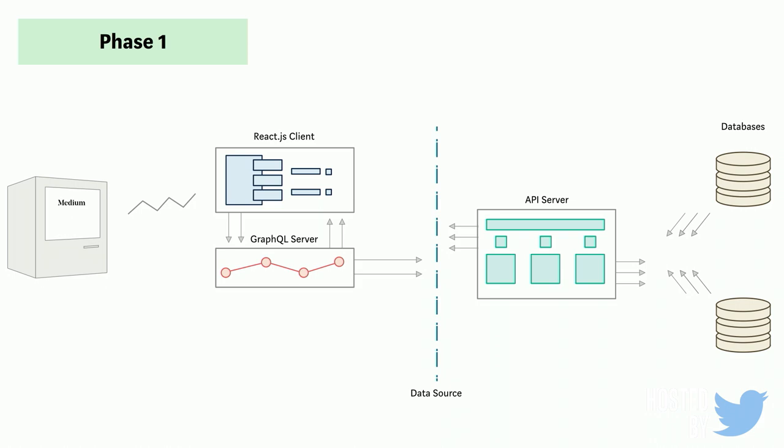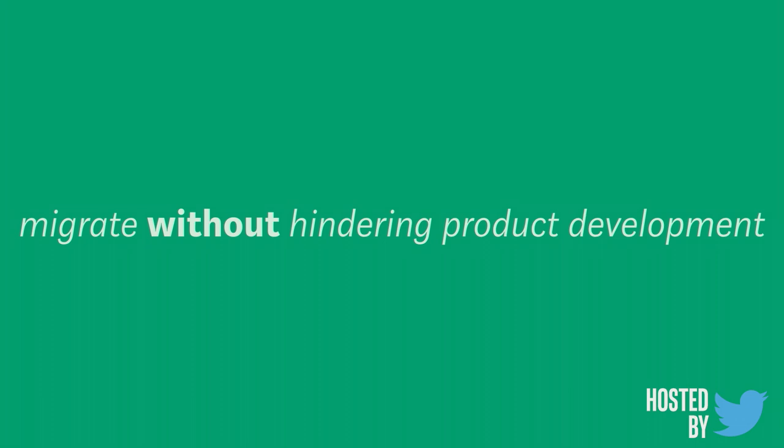Our API server is still talking to the same databases — that's all behind our data source line. With GraphQL we're able to compile all of the stuff we're getting from our API server. What's cool is that our new system is being built alongside our old system. We can still hit different pages using the old system, but now we have new surfaces that get migrated using our new system because it actually uses the old API server. So we're migrating without hindering product development — product engineers get the flexibility to begin working with our new tools sooner and provide value as soon as possible.